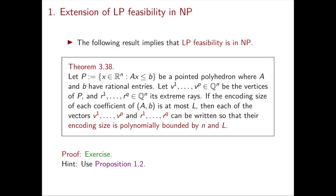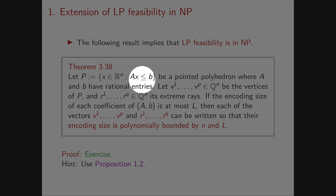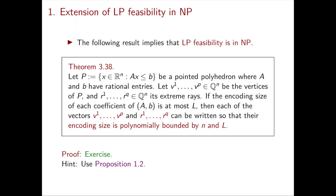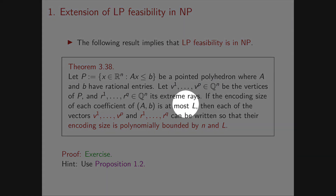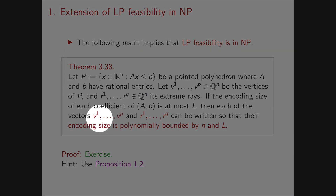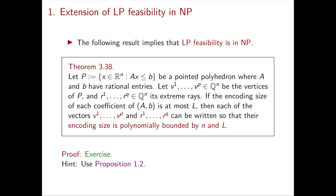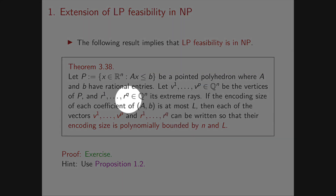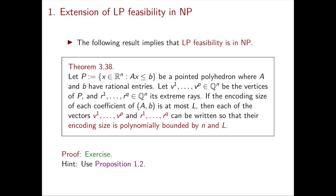The extension theorem: we have a pointed rational polyhedron P = {x : Ax ≤ b} with vertices v1, …, vp and extreme rays r1, …, rq. Using L to denote the encoding size of every coefficient of A and b, every vector v_i and every vector r_j can be written with encoding size polynomially bounded by n and L. This is exactly what we saw to show LP is in NP, now extended to include the extreme rays.